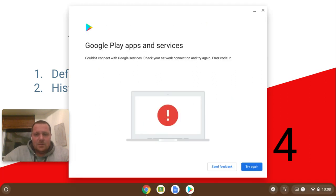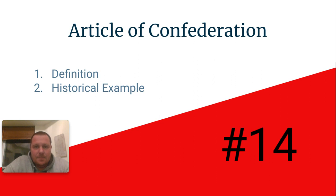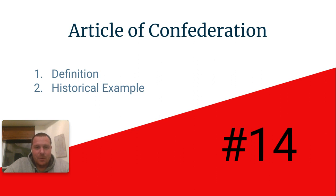There were lots of obvious weaknesses, including the fact that the Articles of Confederation government couldn't tax at the national level, which meant it was really tough to have any money to do anything. Some other obvious weaknesses stemmed from the fact that the national government didn't have enough power to really do much of anything. If you could sum up the weaknesses into one statement, it would be that the national government was simply too weak to be effective.